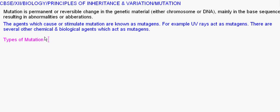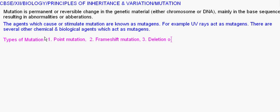The types of mutation written in the book are: point mutation, frame shift mutation, and deletion or insertion. Deletion or insertion can be a type of point mutation as well as frame shift mutation.